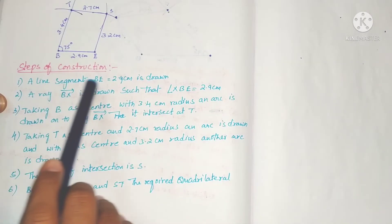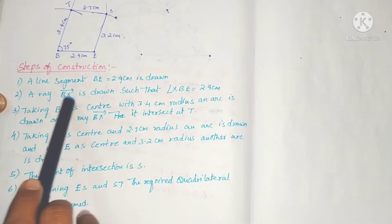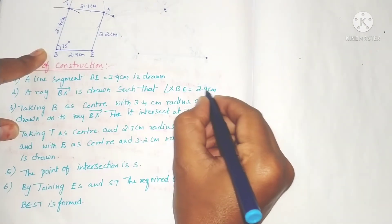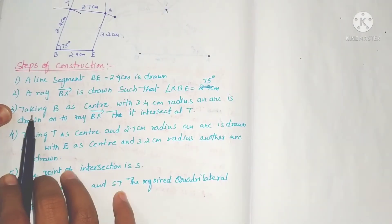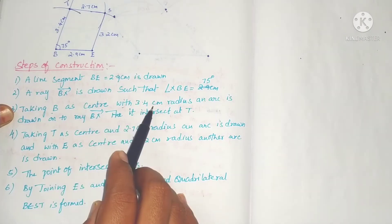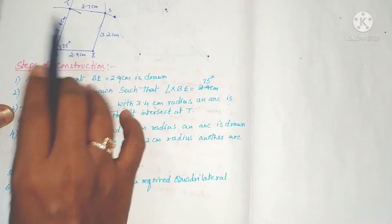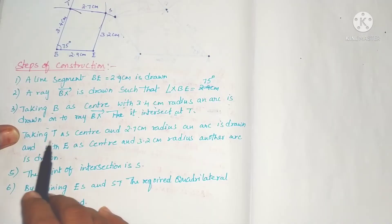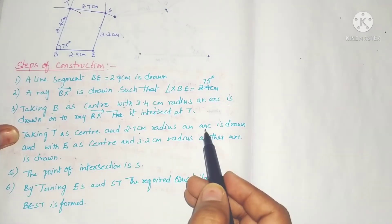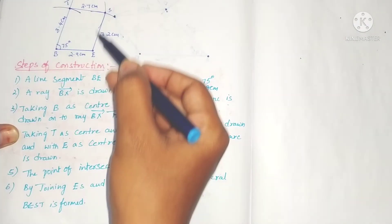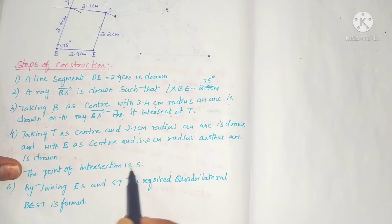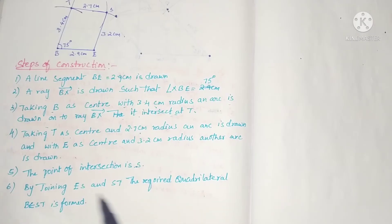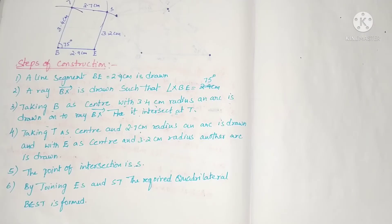Steps of construction: Step 1: Draw line segment BE. Step 2: Draw ray BX such that angle XBE = 75 degrees. Step 3: Taking B as center with 3.4cm radius, draw an arc on the ray intersecting at T. Step 4: Taking T as center with 2.7cm radius and E as center with 3.2cm radius, draw arcs intersecting at S. Step 5: Join ES and ST. The required quadrilateral BEST is formed.